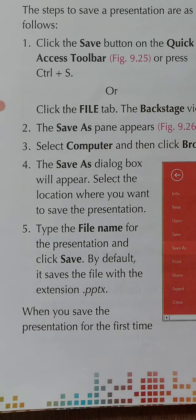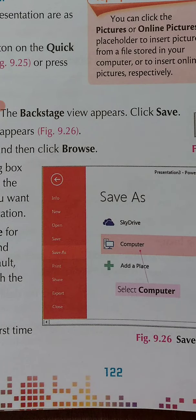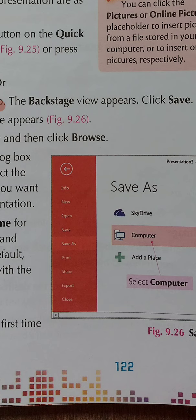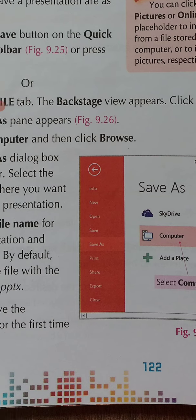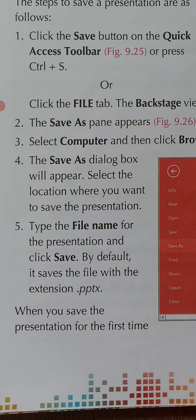Then you will come to step 4: the Save As dialog box will appear. Select the location where you want to save the presentation. You will find the Save As option in figure 9.26 on the left-hand side. Click it to select the particular folder where you want to save your presentation.